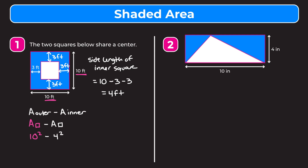To find the area of our inner square we do 4 feet squared. Simplifying: 10 squared is 100, and 4 squared is 16, and 100 minus 16 gives us a shaded area of 84 feet squared.